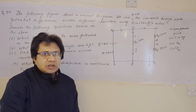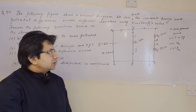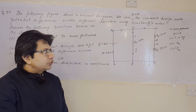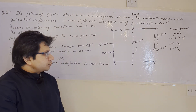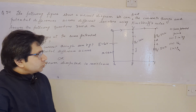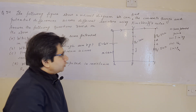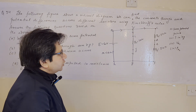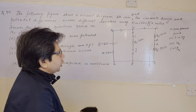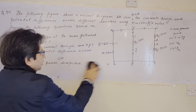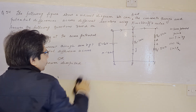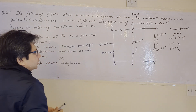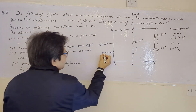The problem is based on the topic of electric circuits and the use of Kirchhoff's voltage and current law. First of all, we have to find out the same potential points — that is, the points having the same potential.